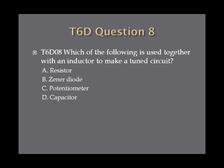Question 8. Which of the following is used together with an inductor to make a tuned circuit? A. Resistor, B. Zener diode, C. Potentiometer, or D. Capacitor?